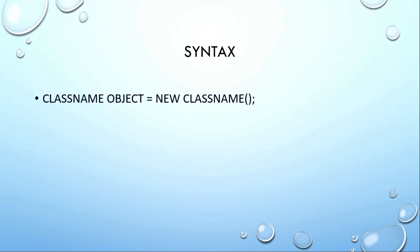This is the syntax for object creation: ClassName objectName = new ClassName(); The class name is written at the top, then the object name, followed by the new keyword, which allocates memory. After memory is allocated using the new keyword, you write the class name again. This is the object creation syntax.